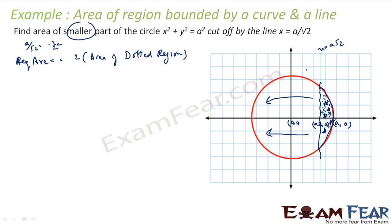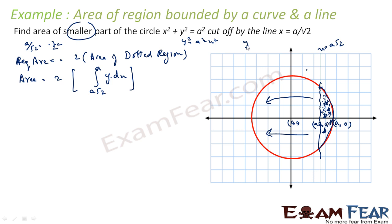To find the dotted area, I can vary with respect to x. I could also vary with respect to y, but then I would need to find an extra point. Since x varies from a/√2 to a, let us use dx. So the area is 2 × ∫y dx from a/√2 to a, where from the circle equation x² + y² = a², y = √(a² − x²).